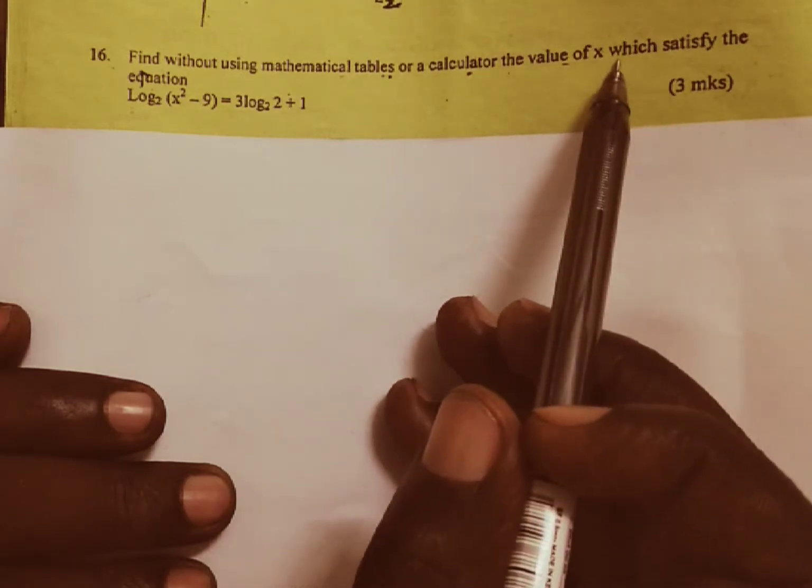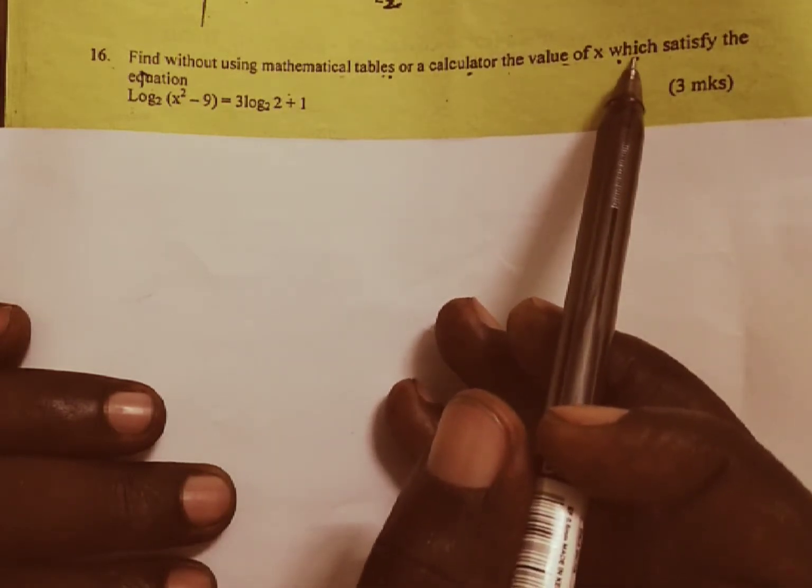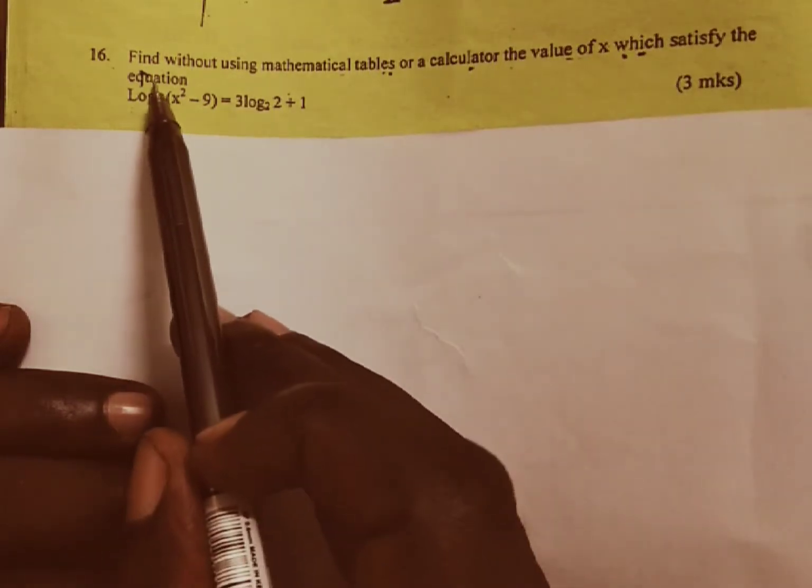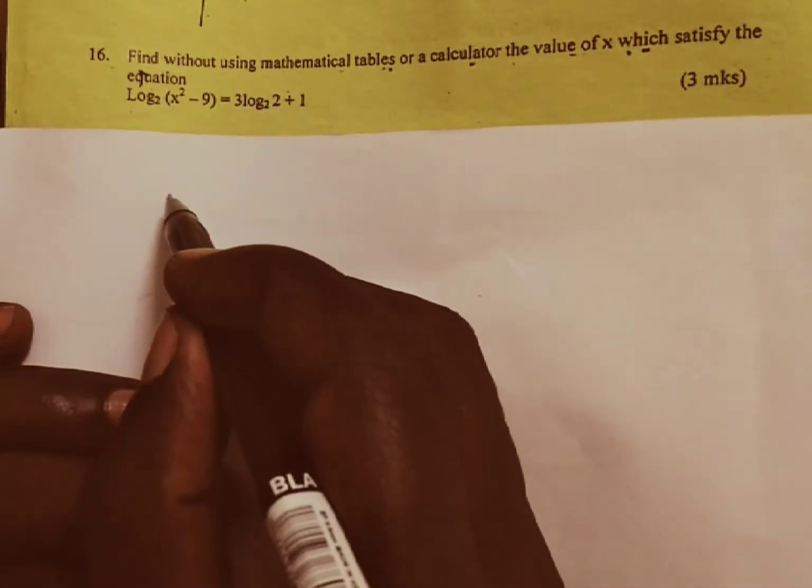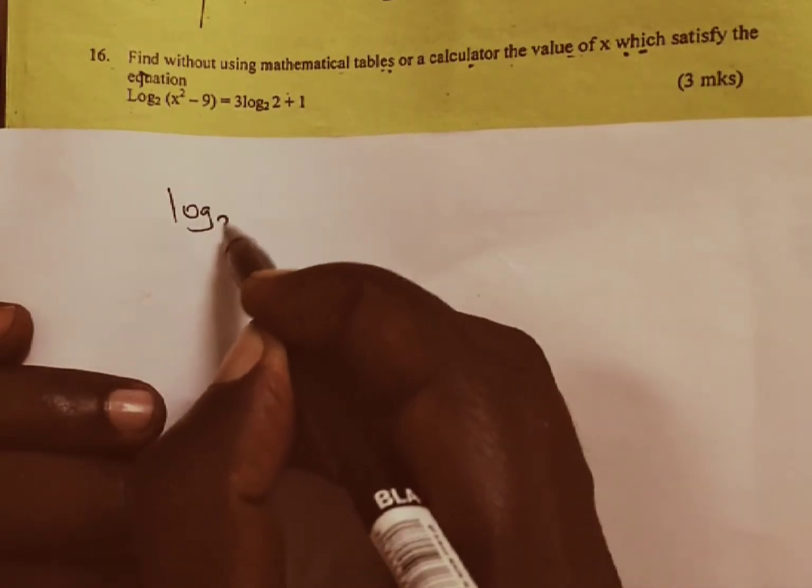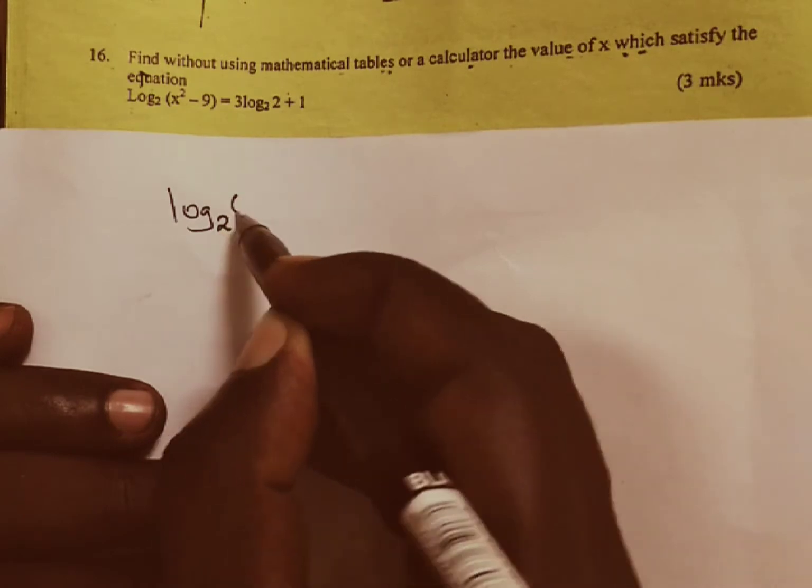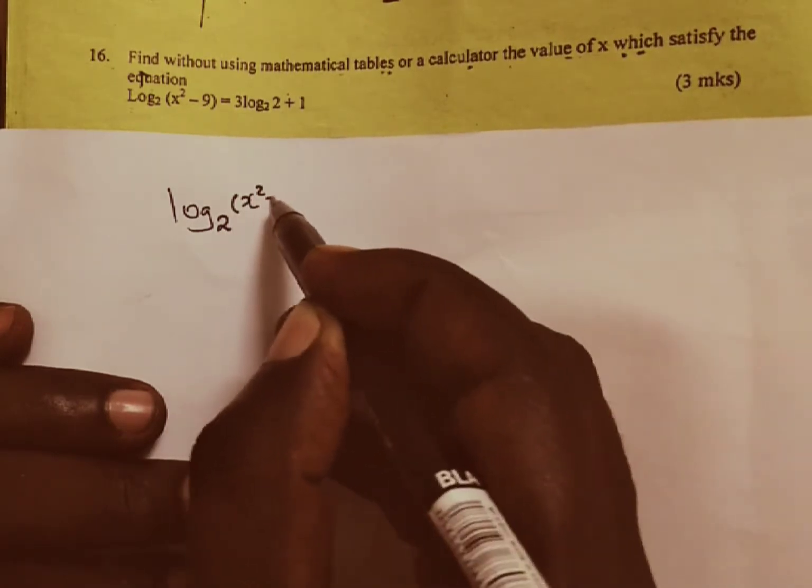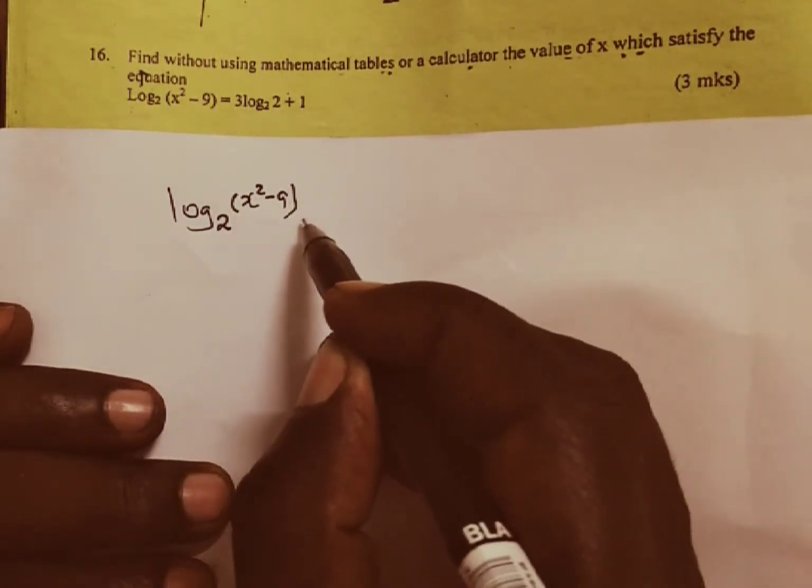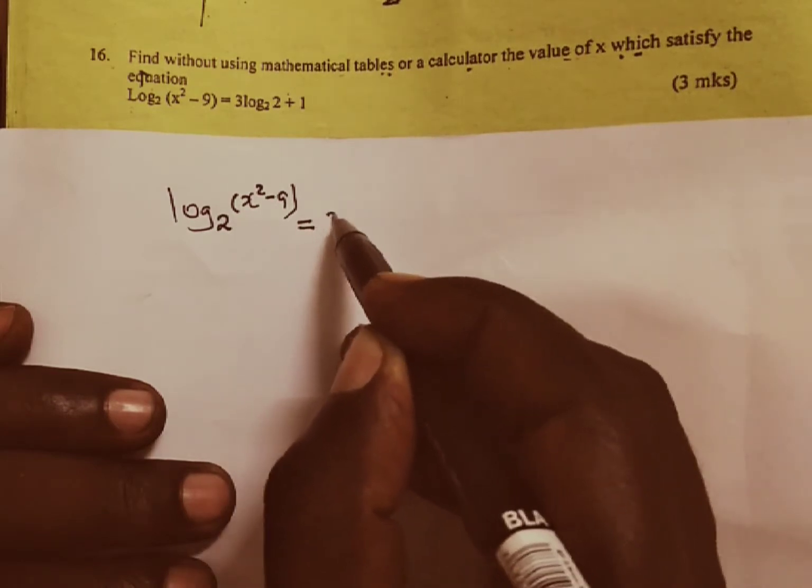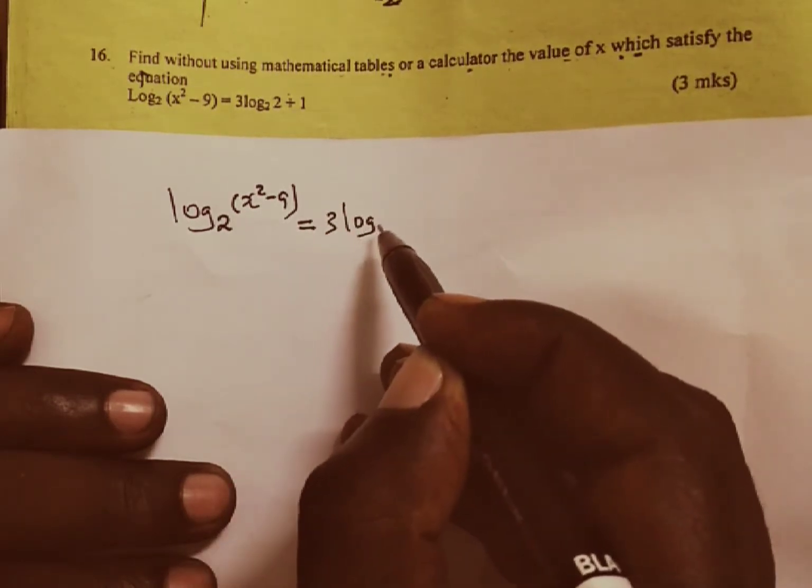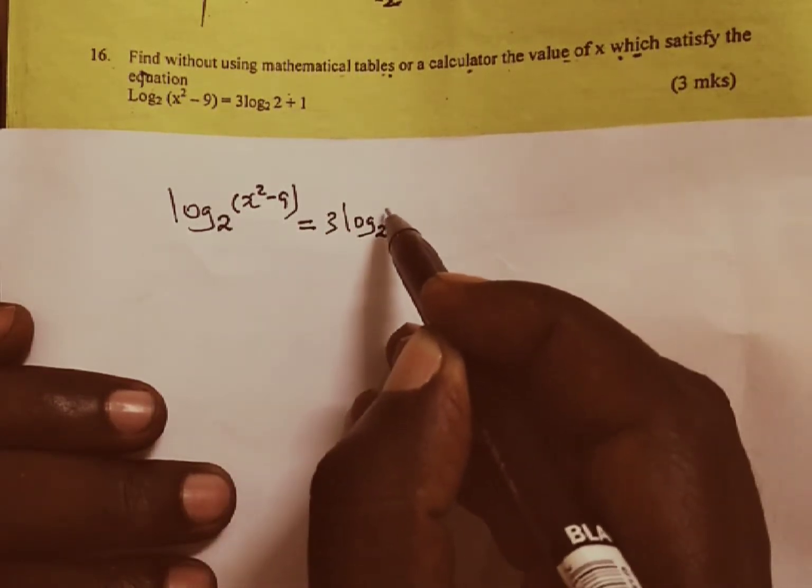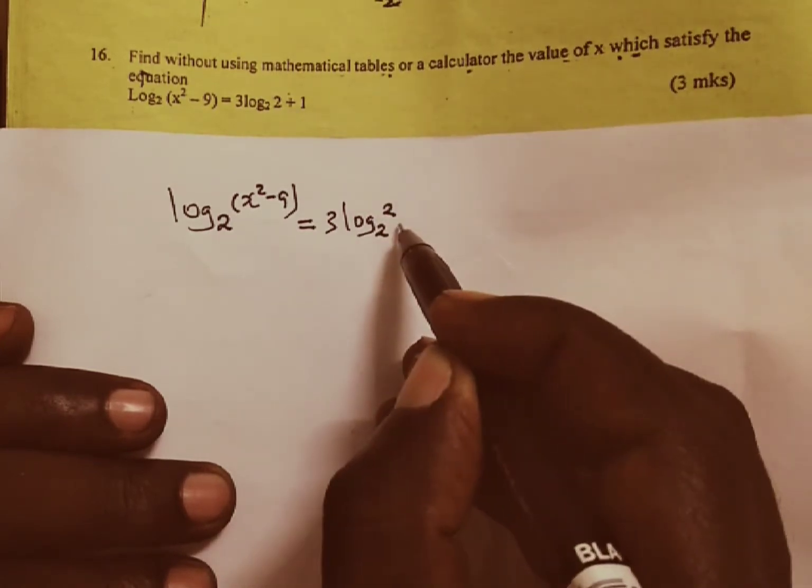The value of x which satisfy the equation. And the equation we have is log base 2 raised by x squared minus 9, which is equivalent to 3, the log of base 2 raised to 2, then we add 1.